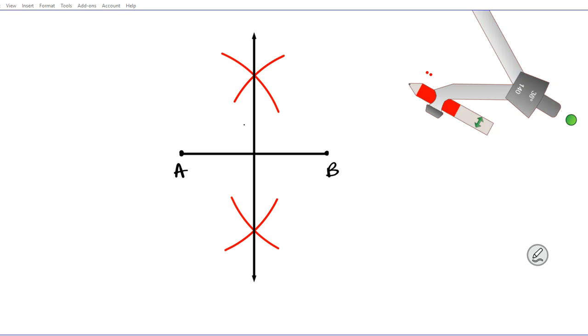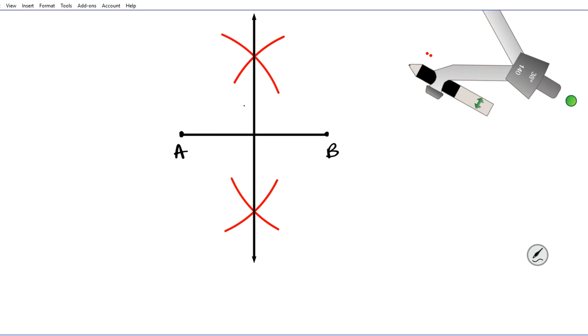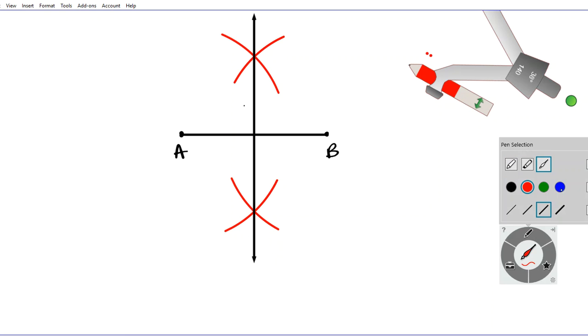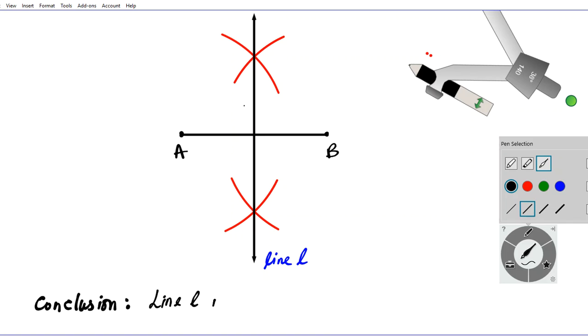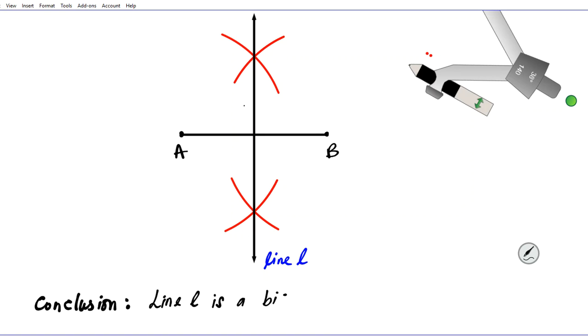Let's go ahead and write down some statements to basically communicate what we have done. So let's call this line that we just created line L. What do we know about line L? Our conclusion is as follows based on the construction that we just did: Line L is the bisector of segment AB.